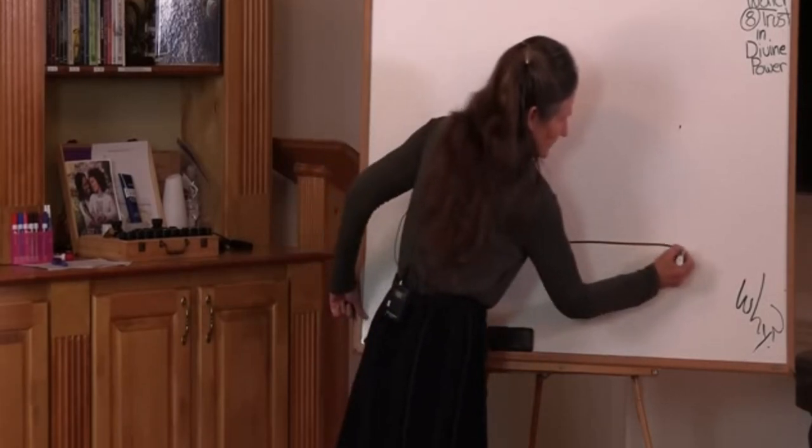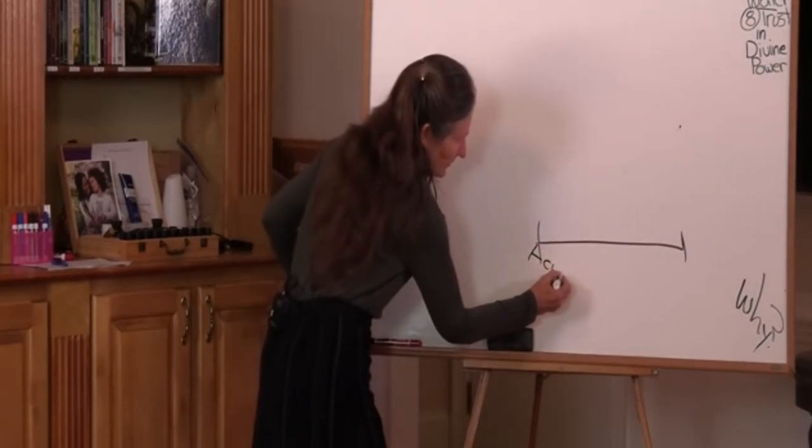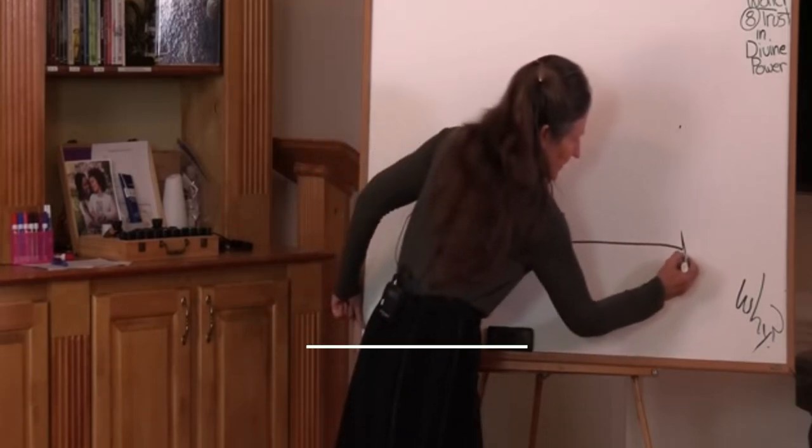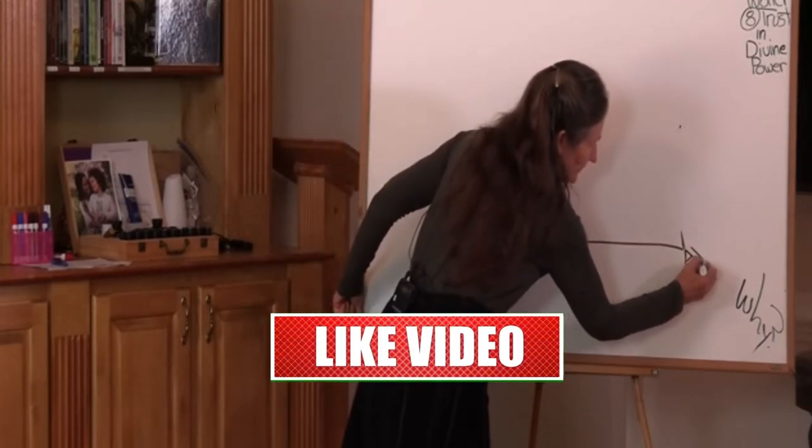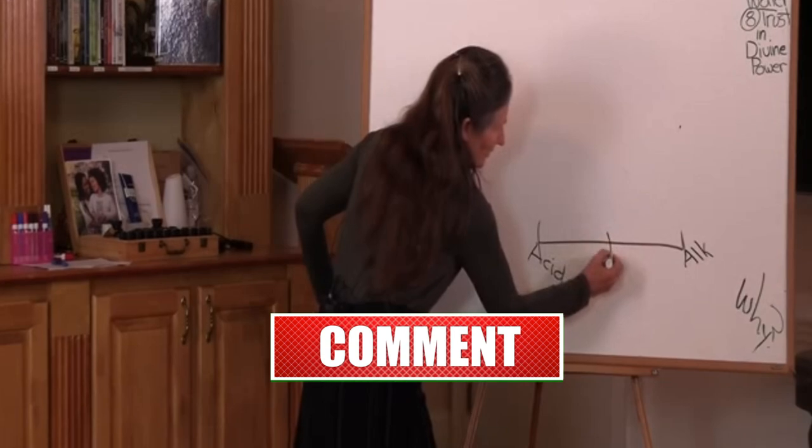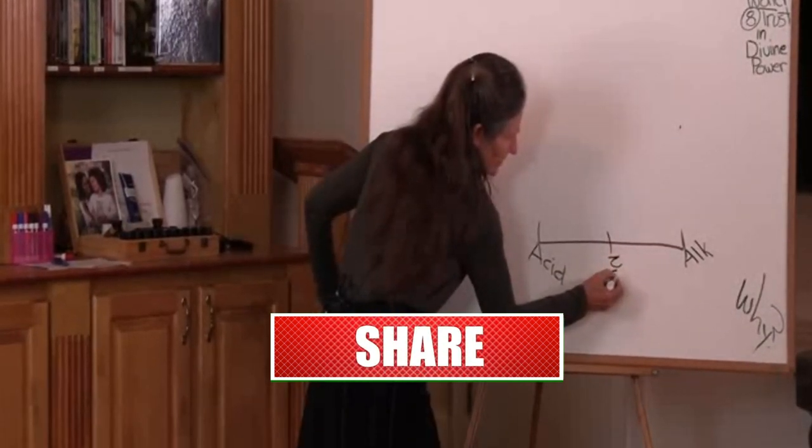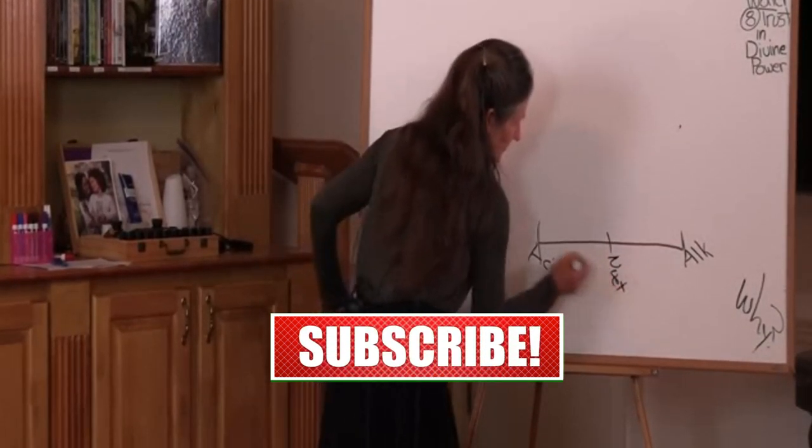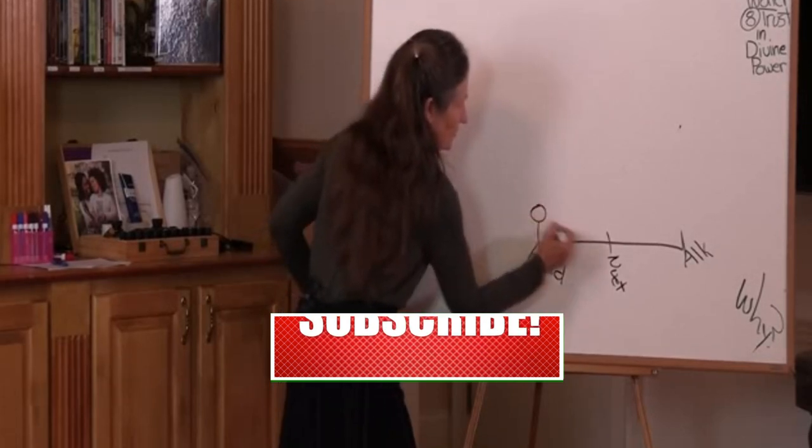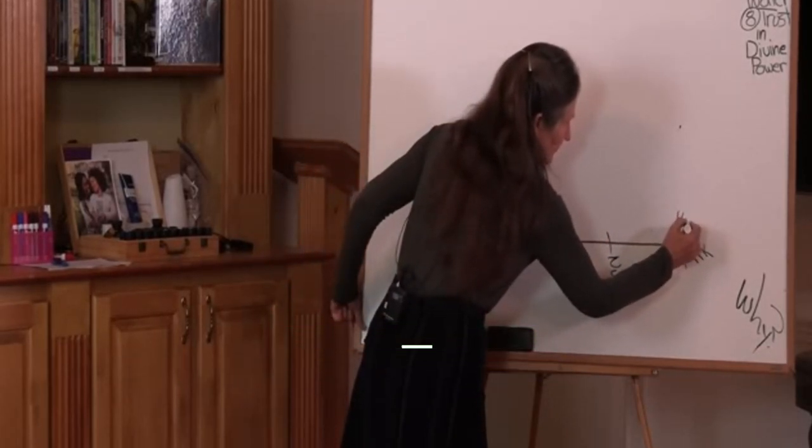So up one end, we have acid. And up the other end of the acid-alkaline scale, we have alkaline. In the middle, we've got neutral. Neutral is neither acid nor alkaline. So the acid scale, it's naught. Alkaline, it's 14. And in the middle, 7 is neutral.